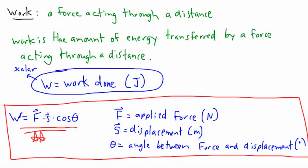We were just looking at what work is, and we defined it as a force acting through a distance — the amount of energy transferred by a force acting through some distance. So the equation W = Fs cosθ should make more sense, because work is defined as force times displacement times the cosine of the angle.